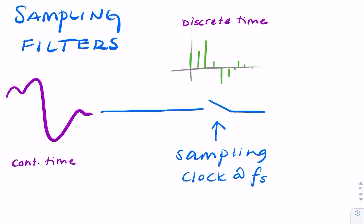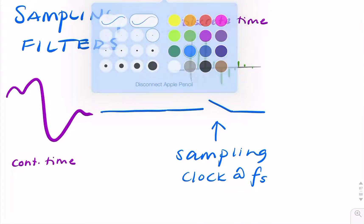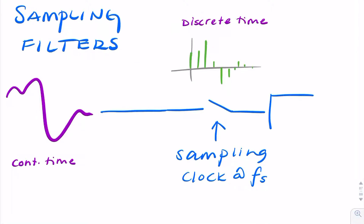Now, in order to recover our signal again, we would need some type of filter. So this is where filtering becomes important. If we have a low-pass filter,